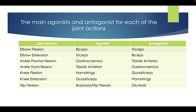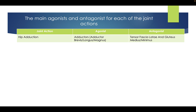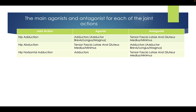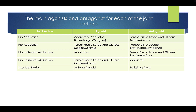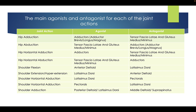Hip flexion — iliopsoas (hip flexors) and gluteals. For hip actions looking at adductors, the antagonist is the gluteus medius and minimus; for abduction these flip over. Hip horizontal abduction — adductors and gluteals; hip horizontal adduction — these flip over. For shoulder flexion — anterior deltoid and latissimus dorsi; for shoulder extension or hyperextension — these flip over. For horizontal abduction at the shoulder — latissimus dorsi and pectorals; for adduction — pectorals become the agonist and latissimus dorsi is the antagonist. For shoulder abduction — posterior and middle deltoids; for adduction — these flip over.